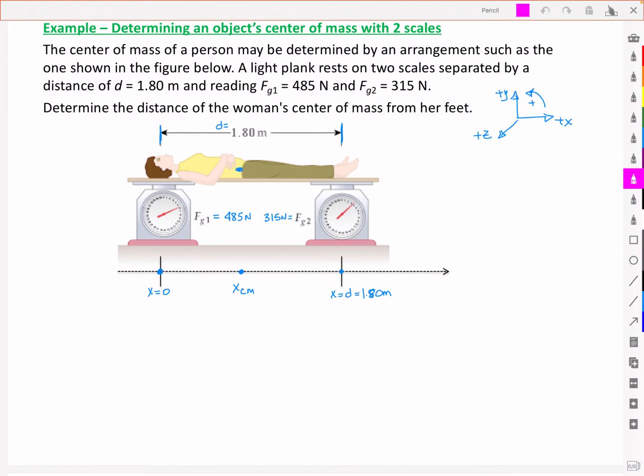What do we have for forces? She's pushing down on the scale such that it registers 485 newtons, which means the scale is pushing upwards on her with an upward force here of Fg1. Likewise there's an upward force of Fg2, and a downward force right where I wrote my center of mass due to her weight. We know Fg1 and Fg2, but we don't know the weight and we don't know the center of mass position.